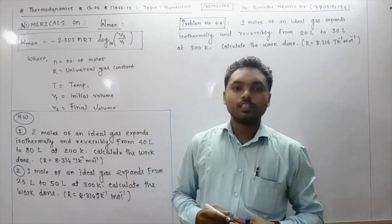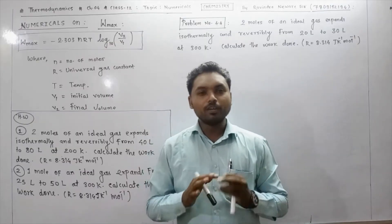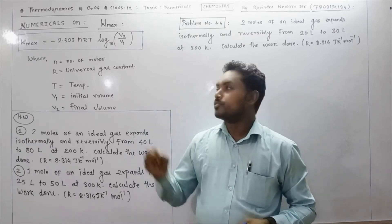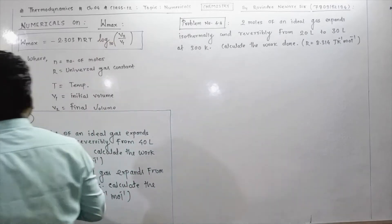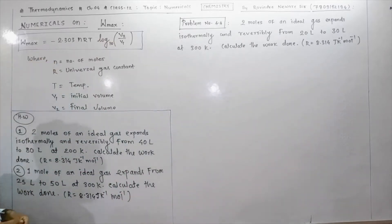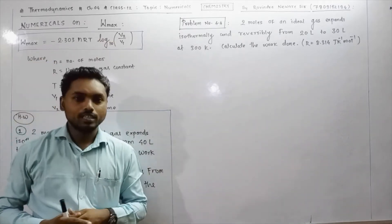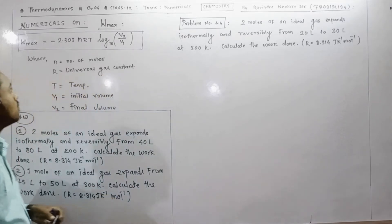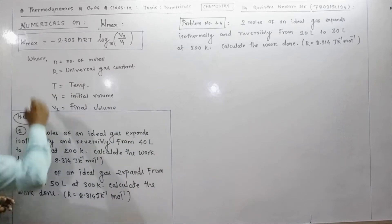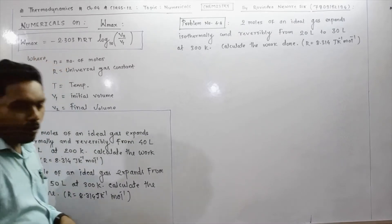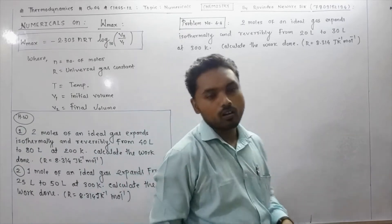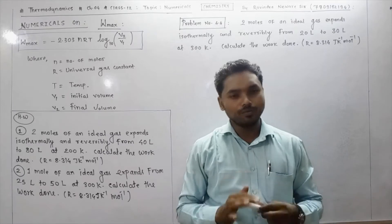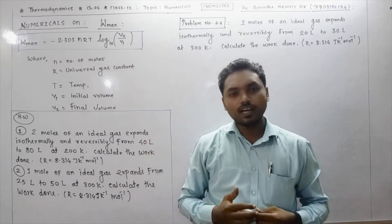Hello students. Today we have to learn the numerical parts of thermodynamics — specifically, numericals based upon Wmax, the maximum work in an isothermal reversible process. The formula is: Wmax is equal to minus 2.303 nRT log of V2 upon V1 to the base 10. This is the formula on which these numericals are based.